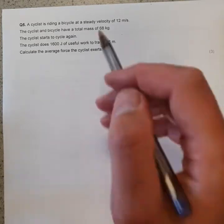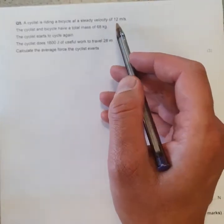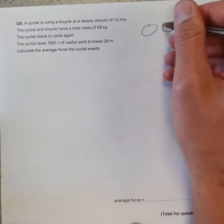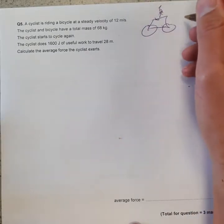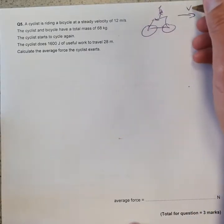Okay, so question five: a cyclist is riding at a steady velocity of 12 meters per second. Let's show ourselves a little diagram. Here's our cyclist and they're going along at a velocity